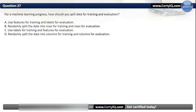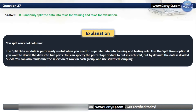Question 27. For a machine learning process, how should you split data for training and evaluation? Options: A. Use features for training and labels for evaluation, B. Randomly split the data into rows for training and rows for evaluation, or D. Randomly split the data into columns for training and columns for evaluation. The correct answer is B — randomly split the data into rows for training and rows for evaluation. Use Split Rows, not columns. The Split Data module is useful to separate data into training and testing sets. You can specify the percentage for each split, randomize row selection, and use stratified sampling.